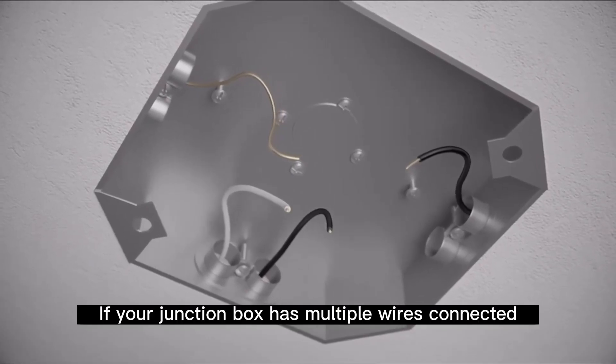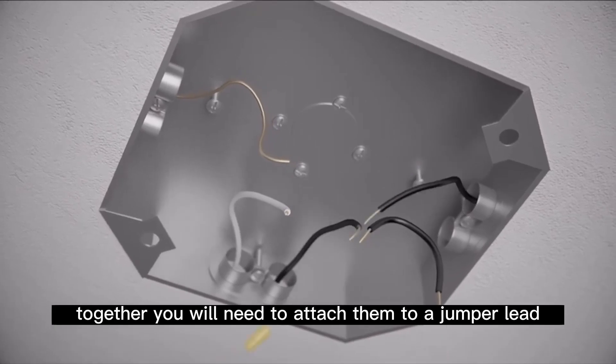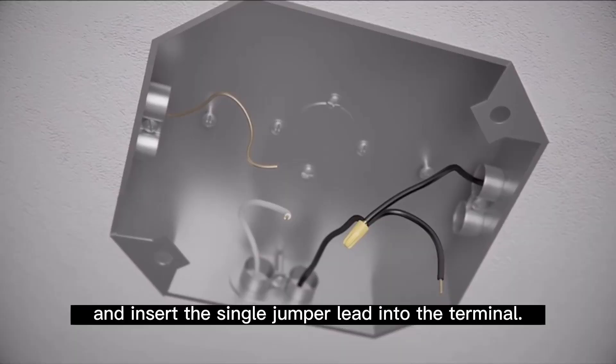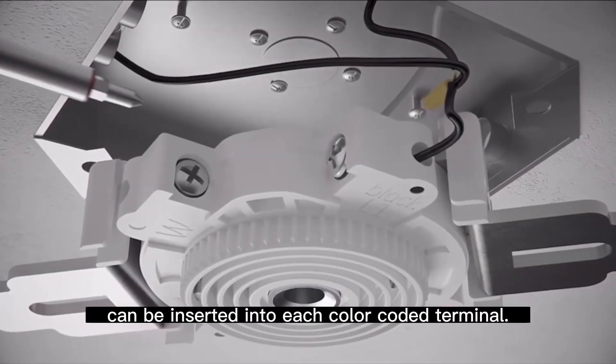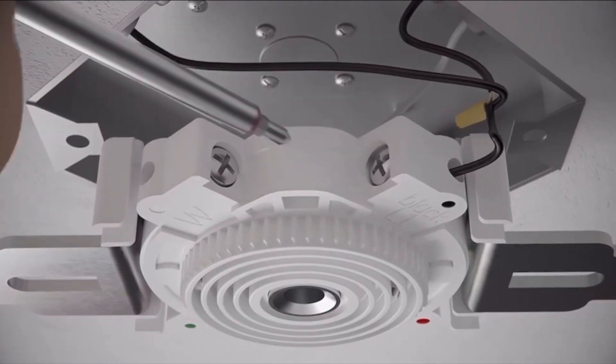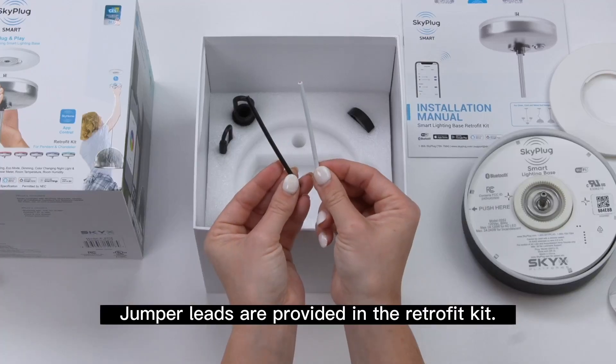If your junction box has multiple wires connected together, you will need to attach them to a jumper lead and insert the single jumper lead into the terminal. Only one wire can be inserted into each color-coded terminal. Jumper leads are provided in the retrofit kit.